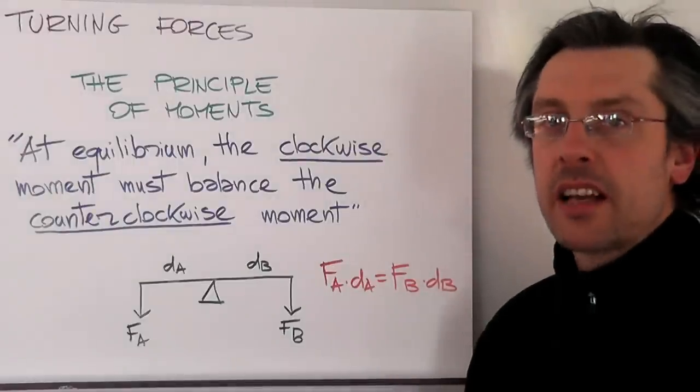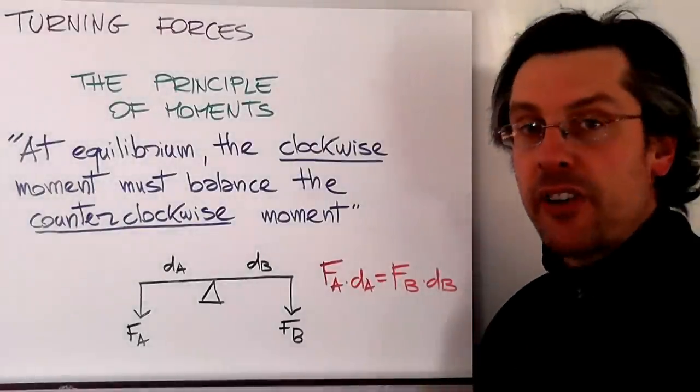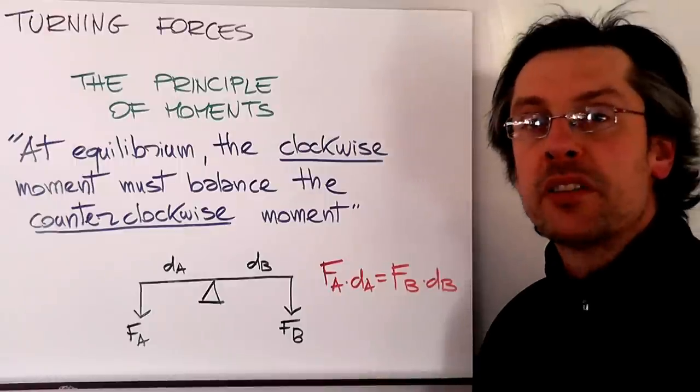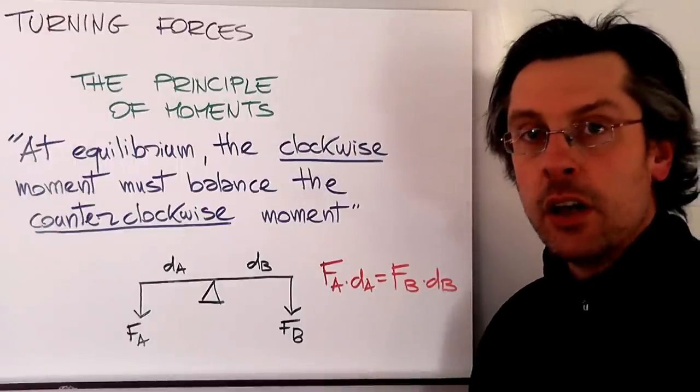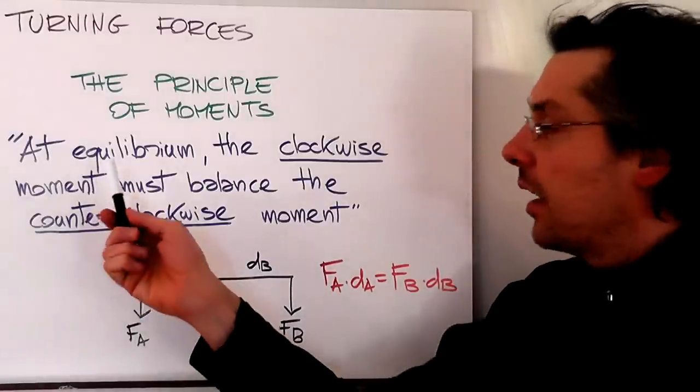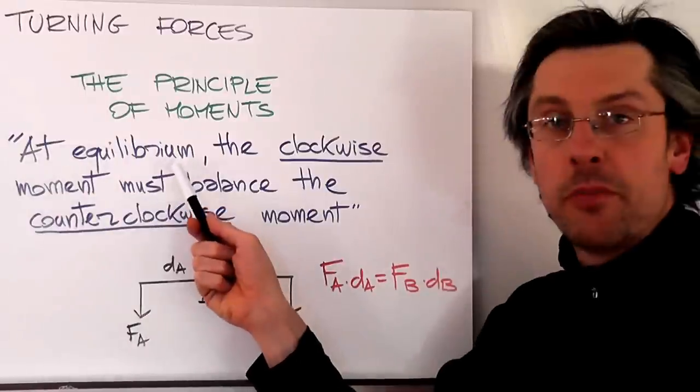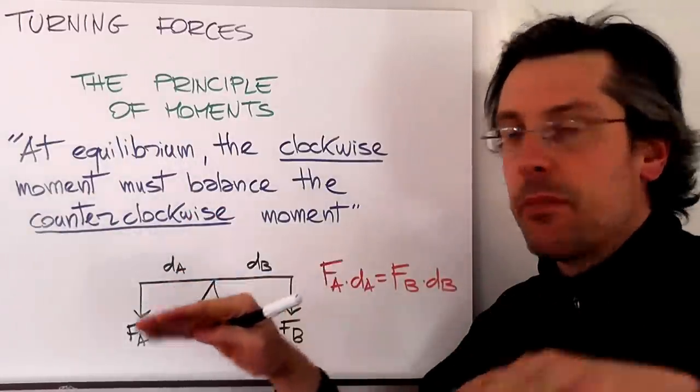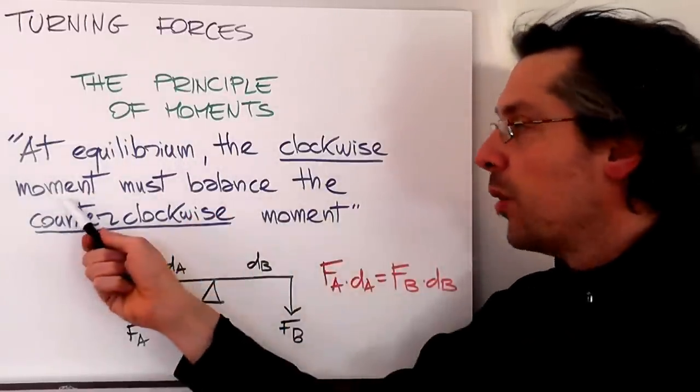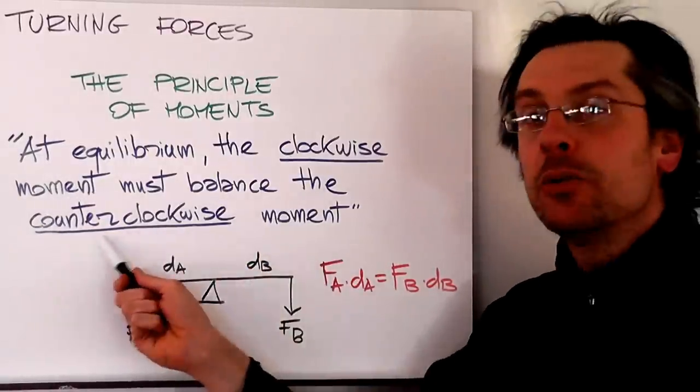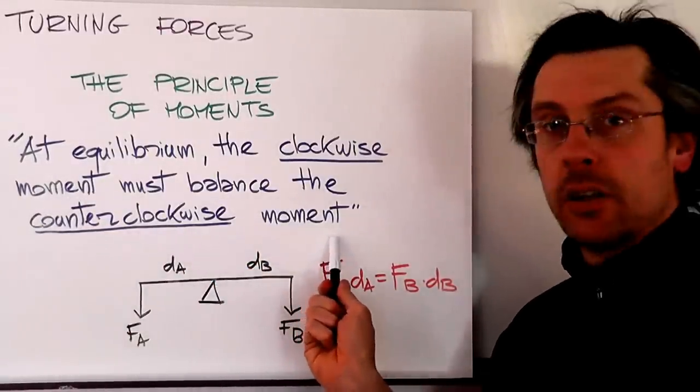The seesaw example is a very common way to show what we call the principle of moments, also known as the law of levers. And that is summarized this way: at equilibrium, so when everything is stable, the clockwise moment or torque must balance the counterclockwise moment or torque.